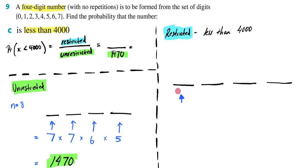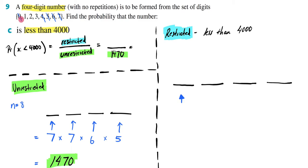For my first position, if I know that my number has to be less than 4,000, what options do I have? I can't put a 7 there, because if I put a 7 the number is going to be 7,000, which is bigger than 4,000. Same with 6, 5, and 4 — if I put a 4 there, any number I get is going to be greater than 4,000. So that leaves me with 3, 2, and 1. I can't put a 0 there either, because it would cease to be a four-digit number. So I have three options for that position.